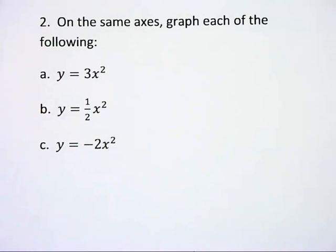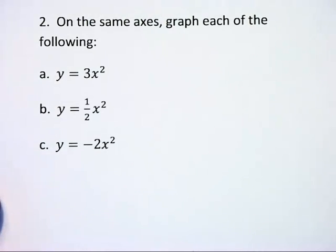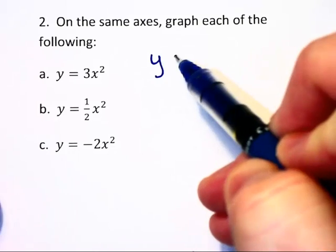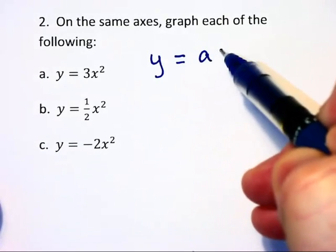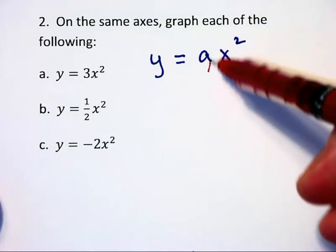Now we are being asked to graph y equals three x squared, one half x squared, and negative two x squared on the same graph. Basically what we are looking at here is graphs of the form y equals ax squared, where a is this leading coefficient.